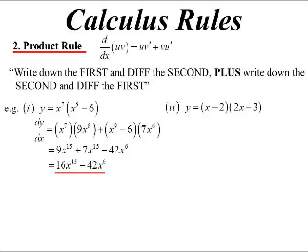Again would be quicker to expand the whole thing out, but let's do it the fun way. Write down the first and diff the second plus write down the second and diff the first. (x-2) times 2, (2x-3) times 1, gives me 4x - 7.